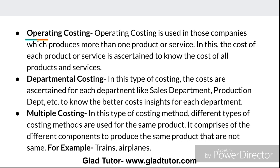In multiple costing, different types of costing methods are used for the same product. It comprises different components to produce the same products that are not identical. In this method, different type of costing methods are used to arrive at the cost of one product. The components may be different, but the product is the same — so multiple costing methods are applied together.